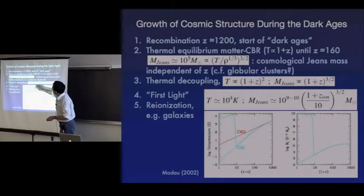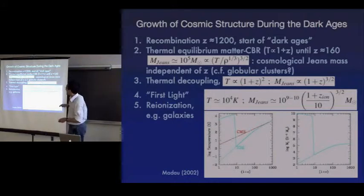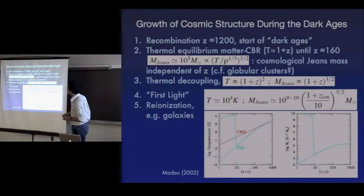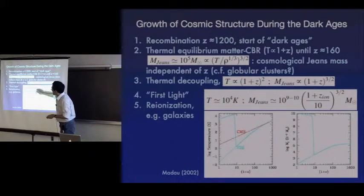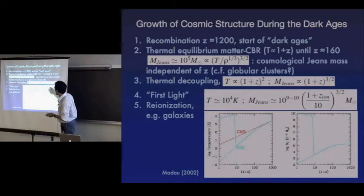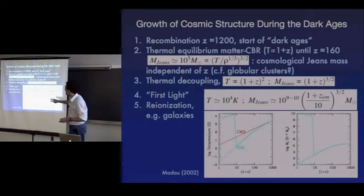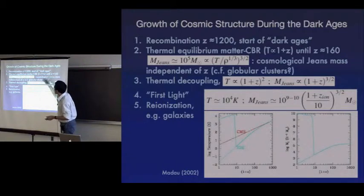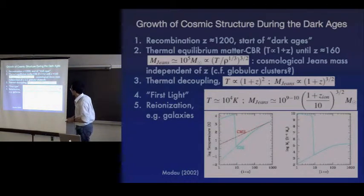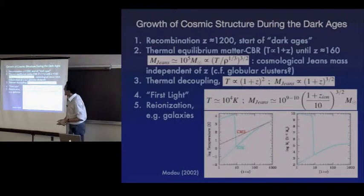Below redshift 160, we have thermal decoupling of the gas — it cools down much more rapidly by adiabatic expansion than the microwave background. Then at some point we have nonlinear structures forming. The universe becomes reionized at maybe redshift ~10. Once you heat to temperatures of order 10^4 Kelvin, appropriate for ionized gas, your Jeans mass is raised to galactic scales of order 10^9 to 10^10 solar masses. The question is exactly how this transition happens.